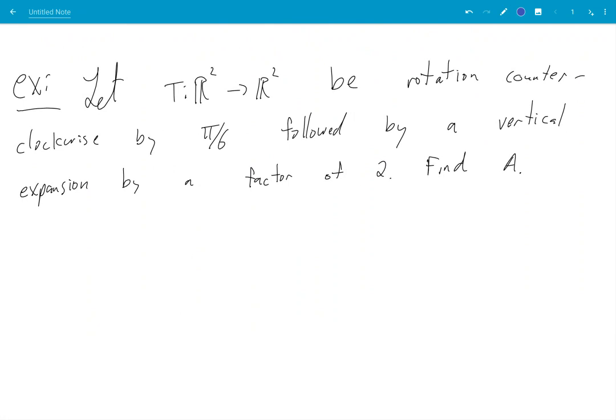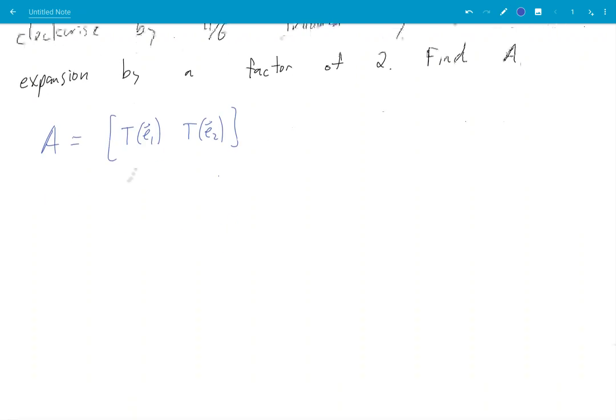Okay, so, what are we doing here? Well, A is going to be T of E₁, T of E₂ again. So, for T of E₁,